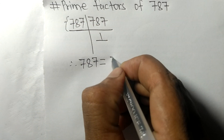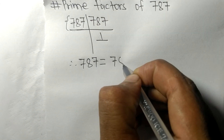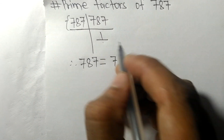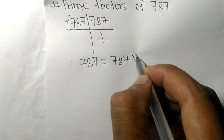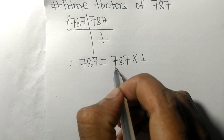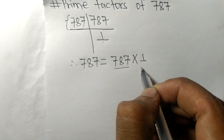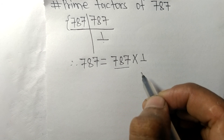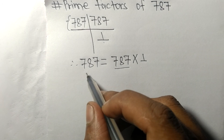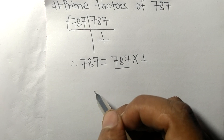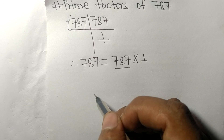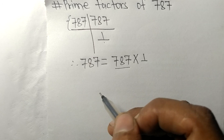From this side it is 787, and from here it is 1. So 787 and 1 are the prime factors of 787. This much for today, and thanks for watching.